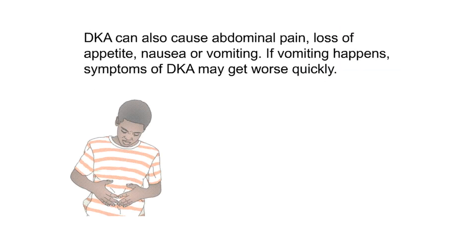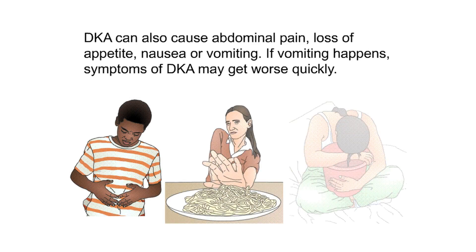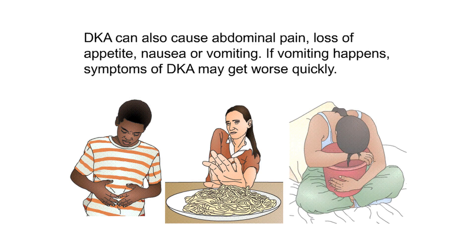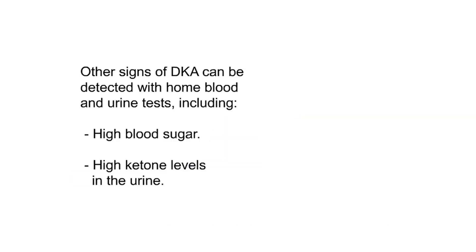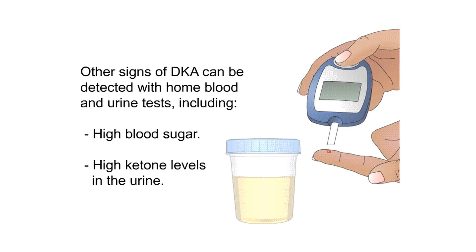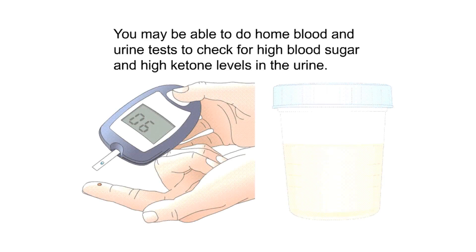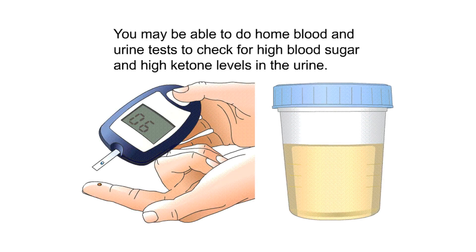DKA can also cause abdominal pain, loss of appetite, nausea, or vomiting. If vomiting happens, symptoms of DKA may get worse. Other signs of DKA can be detected with home blood and urine tests, including high blood sugar and high ketone levels in the urine.